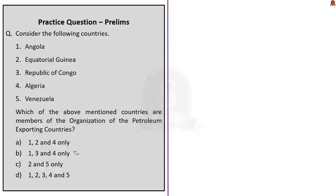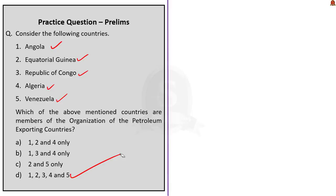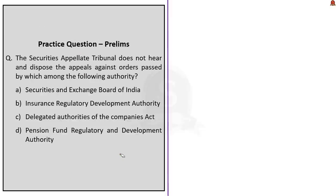The current members of OPEC are Algeria, Angola, UAE, Venezuela, Saudi Arabia, Republic of Congo, Libya, Nigeria, Kuwait, Iran, Iraq, Gabon and Equatorial Guinea. Since this is a direct fact-based question, you have to be aware of the countries that come under various organizations and agencies. The answer for this question is Option D — one, two, three, four and five — which means all the countries listed come under OPEC.